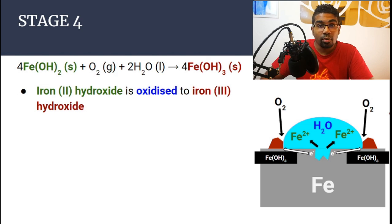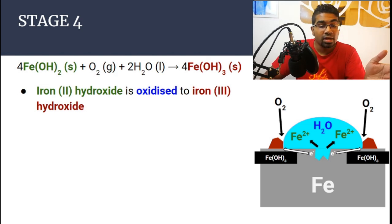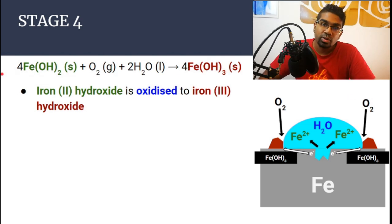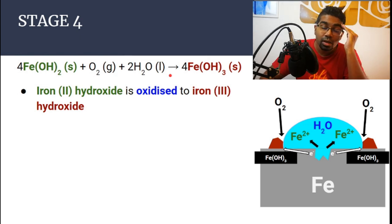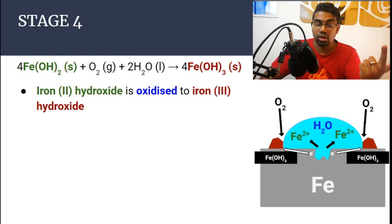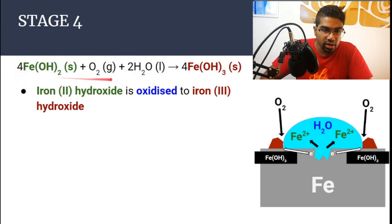The next stage is to form iron-3 hydroxide. Iron-2 hydroxide is oxidized by oxygen into iron-3 hydroxide. Whenever there is an oxidation process in the rusting of iron, oxygen is always accompanied by water. So we write: iron-2 hydroxide plus oxygen plus water gives iron-3 hydroxide.